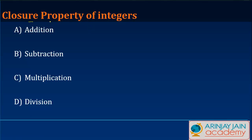Just like we looked at the closure property of whole numbers, let's look at the closure property of integers. An integer can be any number — it could be 0, a positive number, or a negative number. The only thing is that they can be written without a fraction. So the set of whole numbers plus all the negative natural numbers are basically integers.